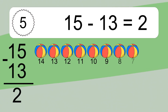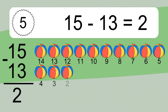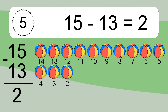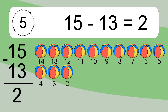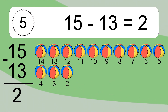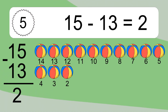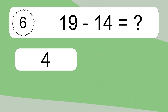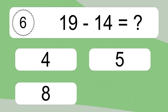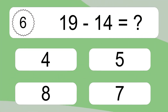15 minus 13 equals 2. Let's count it: 14, 13, 12, 11, 10, 9, 8, 7, 6, 5, 4, 3, 2.